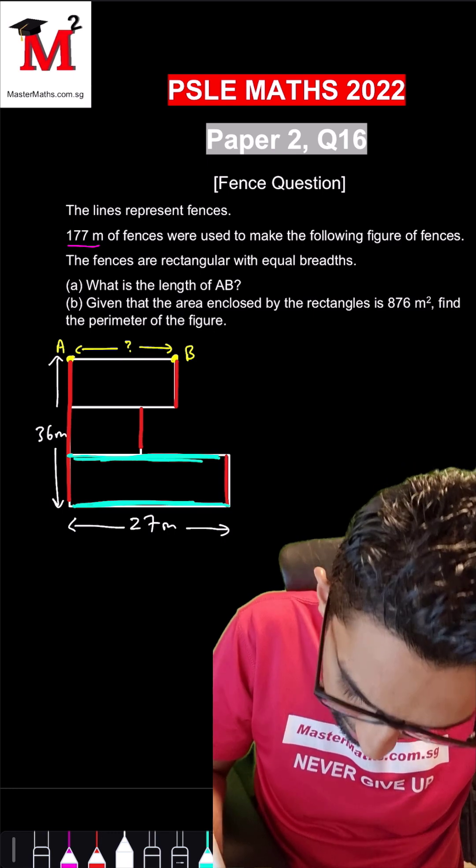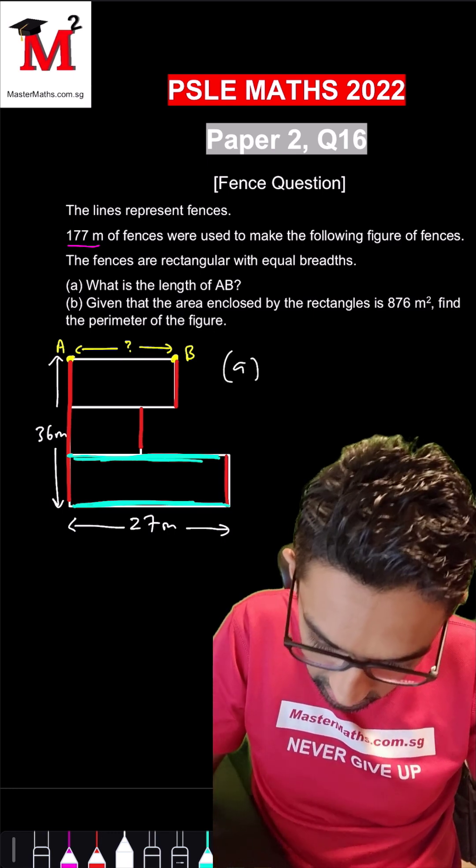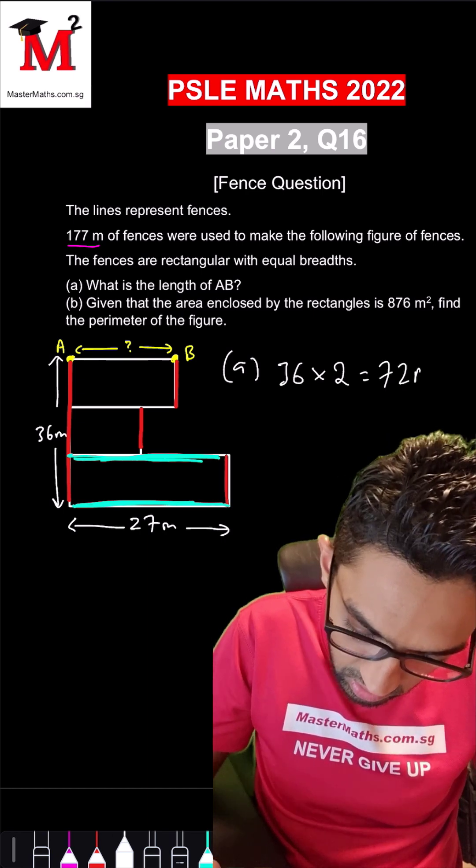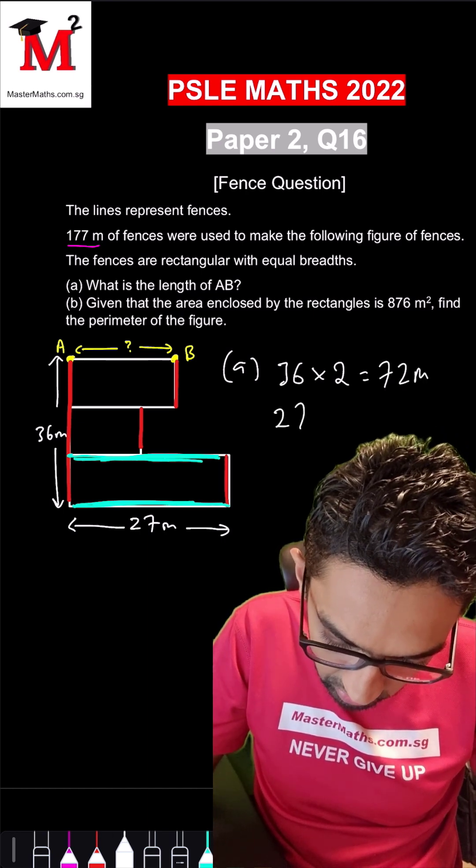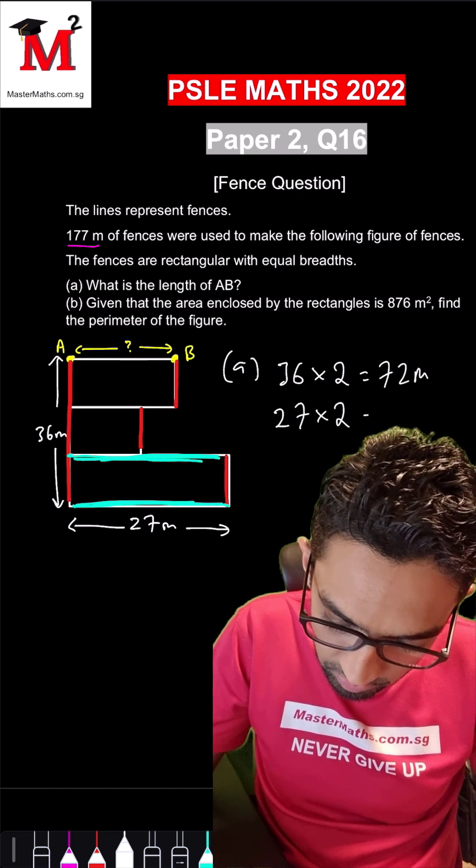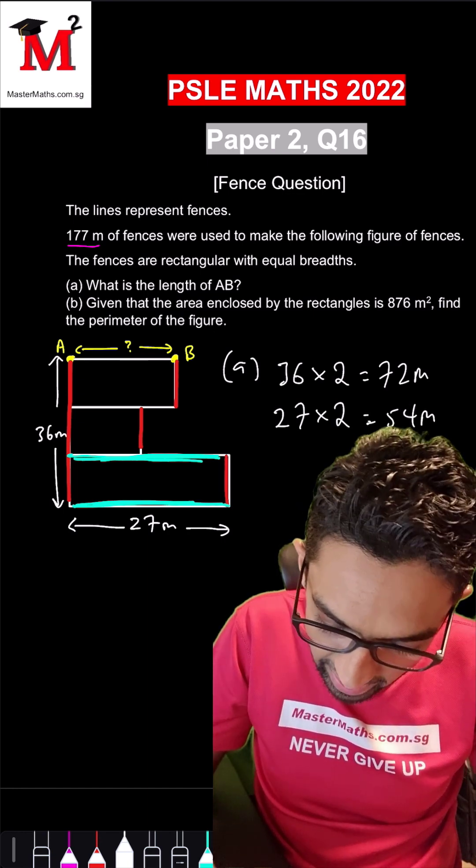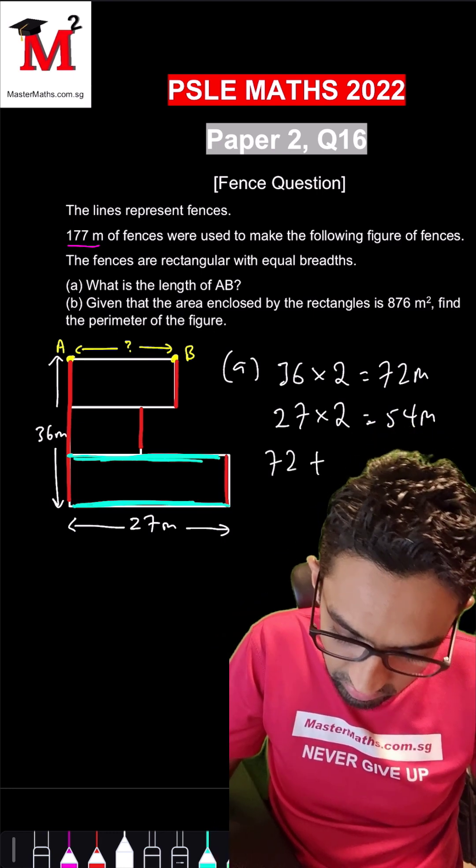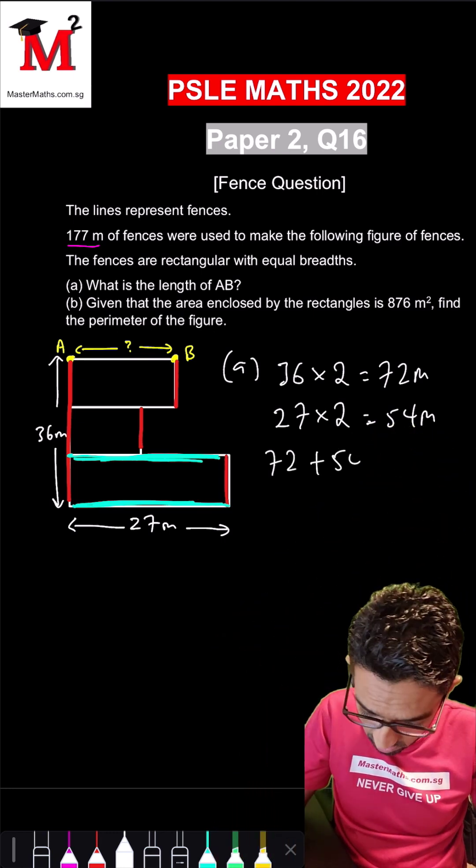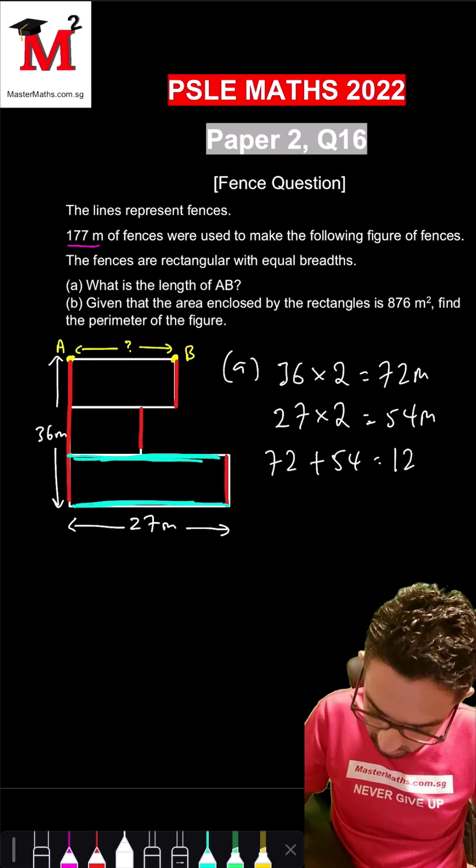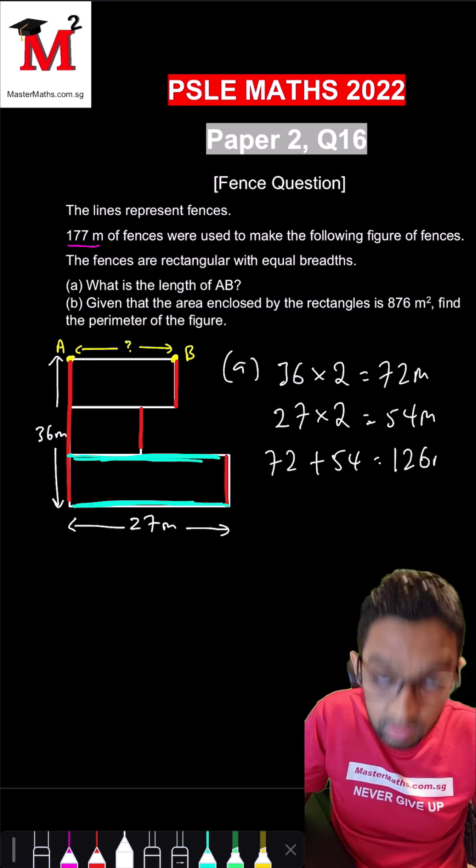First step, what we do is we will take 36 multiplied by 2, we will get 72 meters. We will take 27 multiplied by 2, we will get 54 meters, and we will add these lines together. 72 plus 54, this will give you 126 meters.